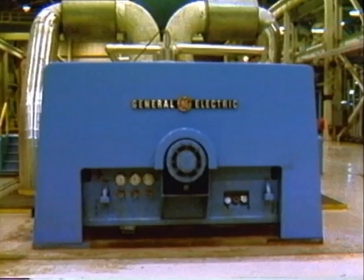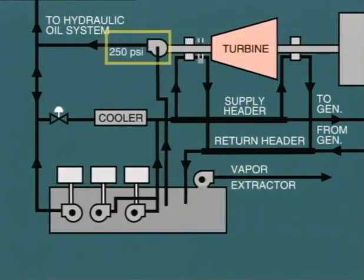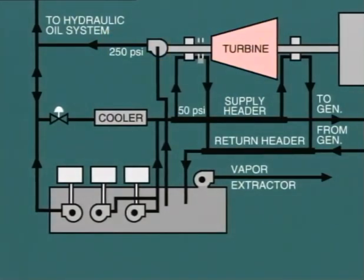The main oil pump is mounted in the front end pedestal and is driven directly from the turbine shaft. When the machine is in operation, the main oil pump delivers oil at 250 PSI, supplying the hydraulic oil system. At the same time, it provides oil to the lube oil header at 50 PSI through a reducing valve.